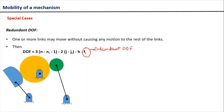In this mechanism, the motion of this green roller is not causing any effect on the motion of other links. This green roller simply spins about its own axis and does not disturb the motion of the other links. So this mechanism is said to have a redundant degree of freedom because of the presence of this roller. Let us calculate the degree of freedom using the Kutzbach criteria, and then use the modified equation to understand how the Kutzbach criteria produces false results.